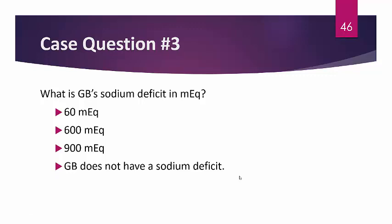For the last question — GB's sodium deficit: Sodium deficit = TBW × (140 − serum sodium). GB is a 100 kg male, so TBW = 0.6 × 100 = 60 liters. Then: 60 × (140 − 125) = 60 × 15 = 900 mEq. So GB has a sodium deficit of 900 mEq — you need to replace 900 mEq of sodium to bring this patient's sodium back to normal. The answer is 900.